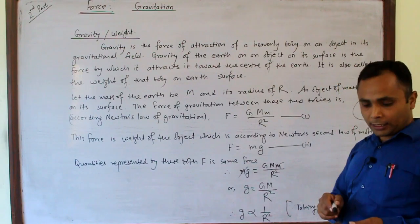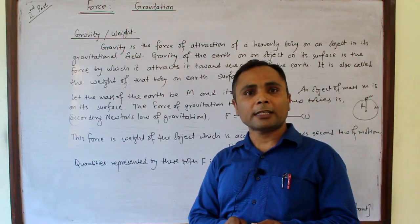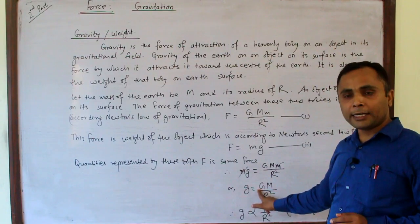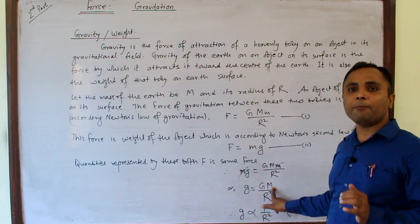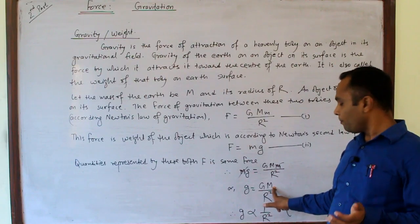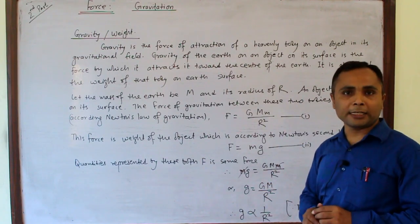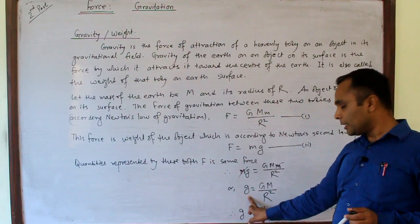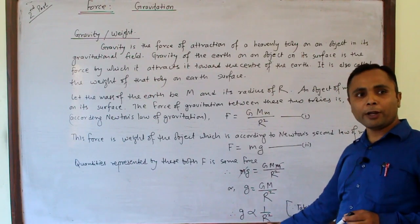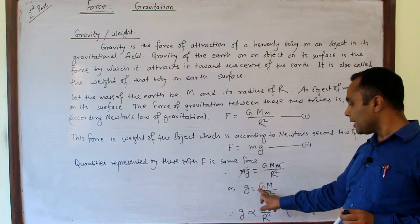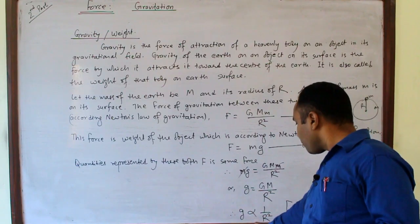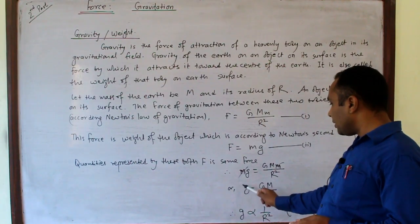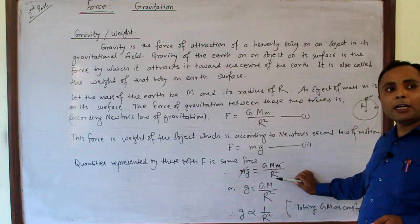Here G is the universal gravitational constant. Its value is fixed and not altered by any circumstances — it is a constant. When we consider a specific heavenly body like the earth, its mass M is also constant. Taking G and M as constants, the relation becomes g inversely proportional to R². This implies the acceleration due to gravity g is independent of the mass of the object, but depends only on the mass of the earth and the radius of the earth.